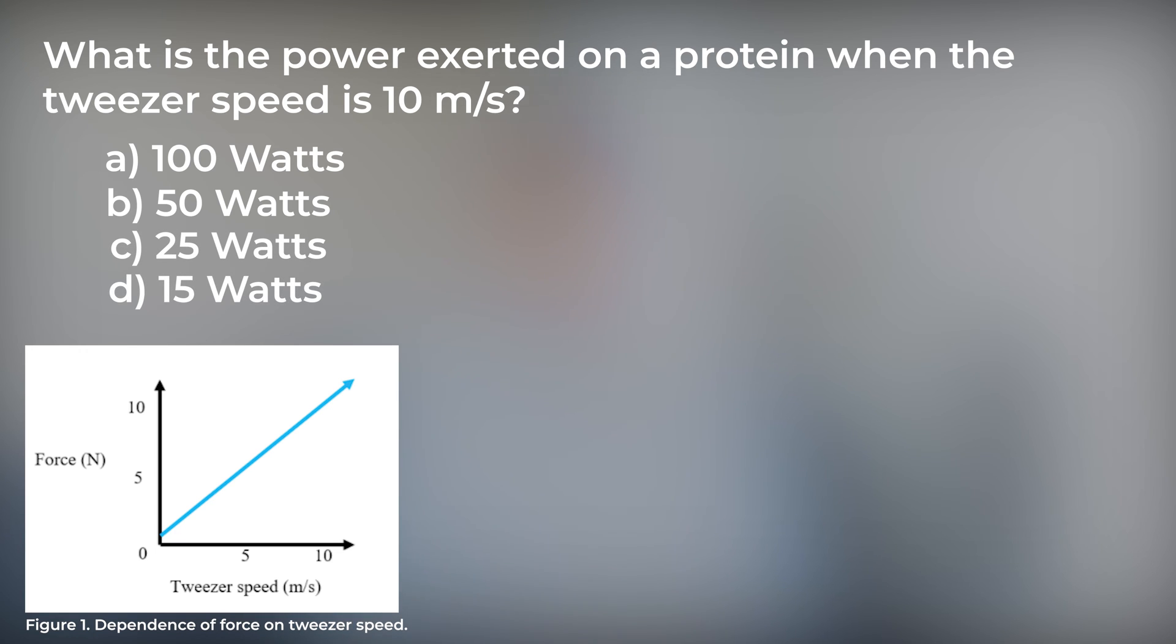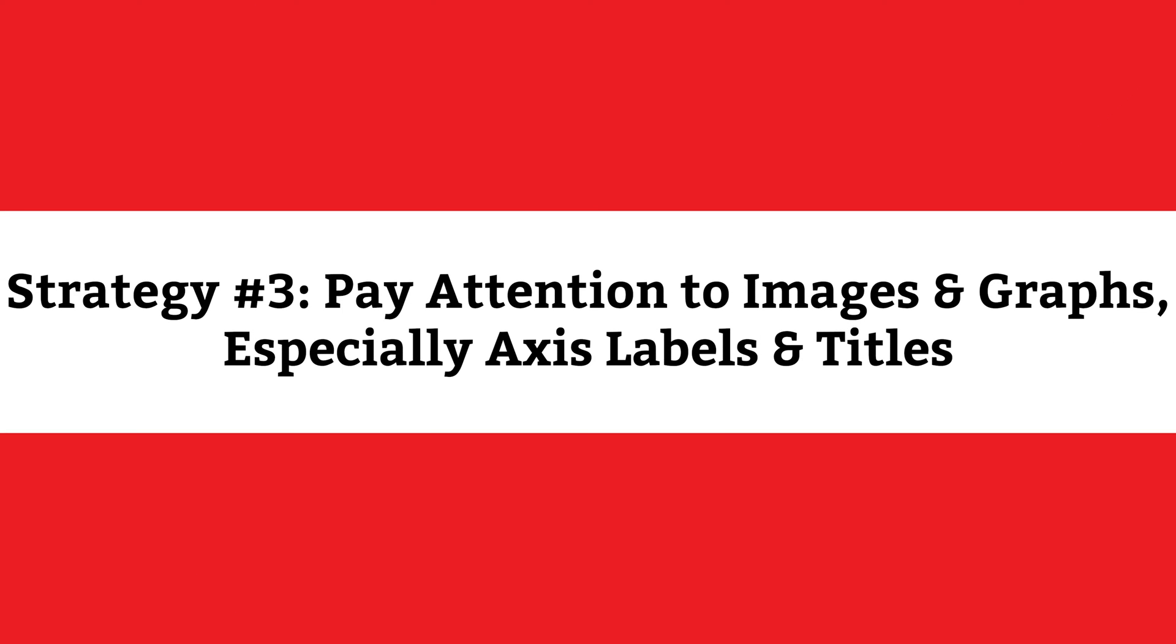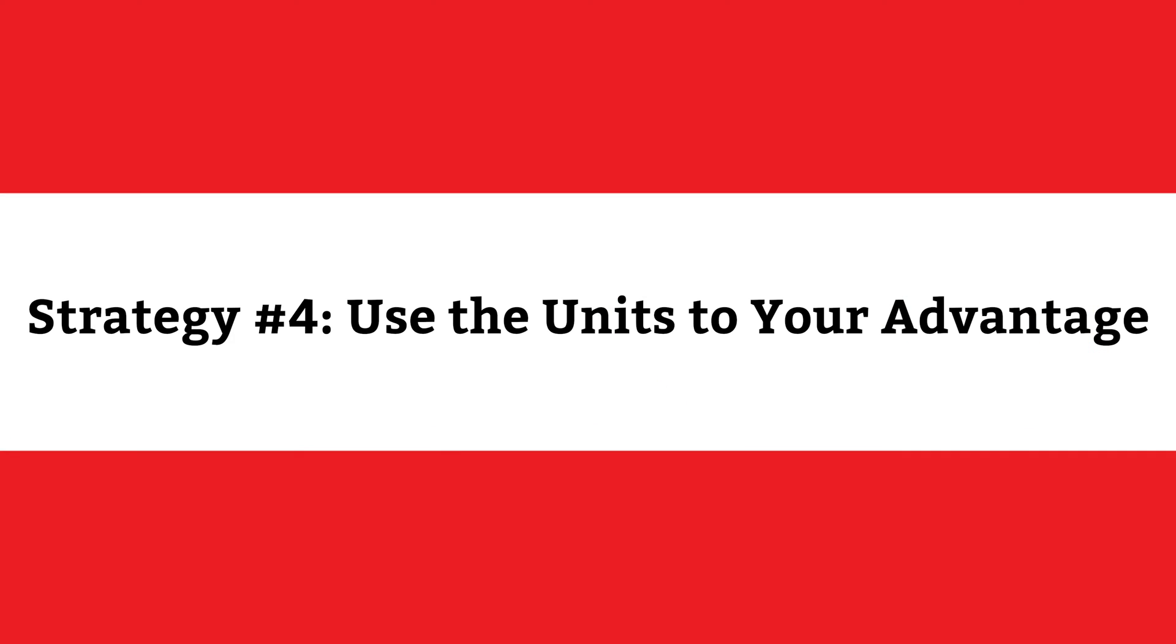Here, let's look at two more strategies. MCAT physics strategy number 3, pay attention to images and graphs, especially axis labels and the title, as they may hide key information needed to answer your question. And MCAT physics strategy 4, use the units to your advantage.